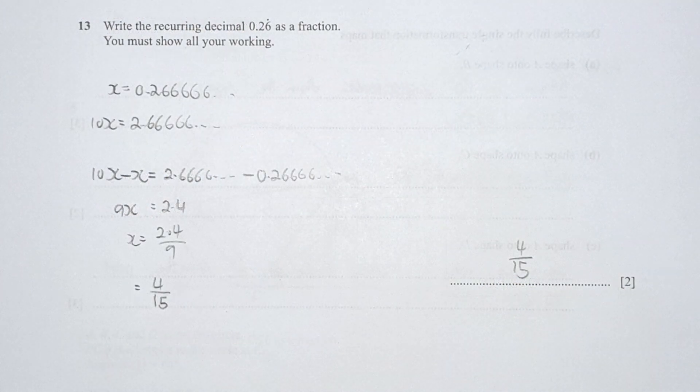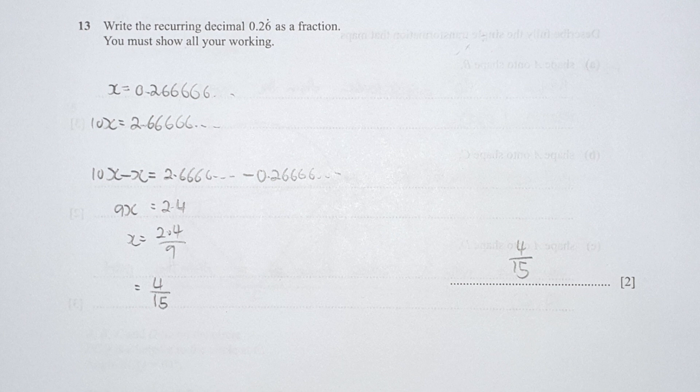Question 13: Write the recurring decimal 0.26 recurring as a fraction. Show all your workings. x equals 0.2666... to infinity. I set 10x equals 2.666... and find the difference. 9x equals 2.4, so x equals 2.4 divided by 9. Your final answer is 4 over 15.